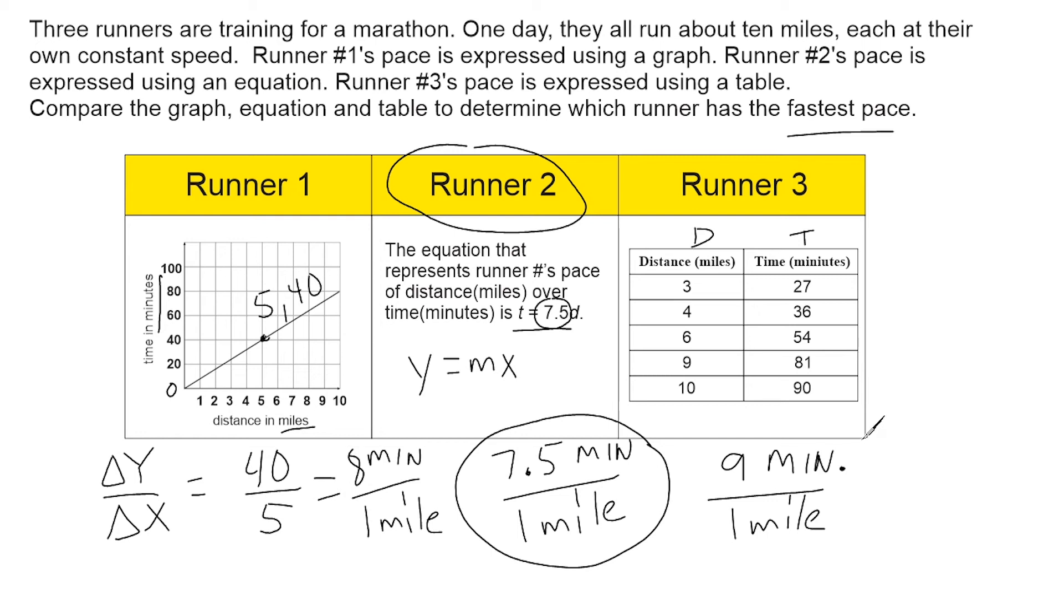Now in the past I've seen a lot of students pick this option right here because they think that a larger number would be like the best pace. But the best pace would be the one that would cover the same amount of distance in the least amount of time, which means they were able to cover that amount of distance faster.